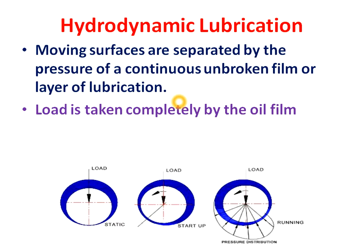The working principle of hydrodynamic lubrication: moving surfaces are separated by a pressure of a continuous unbroken film or layer of lubrication. You can see here a shaft and journal bearing. When this bearing first starts, it is at rest — there is physical contact between the bearing and the shaft. When the shaft starts to rotate, the position changes and a continuous unbroken film begins to form.